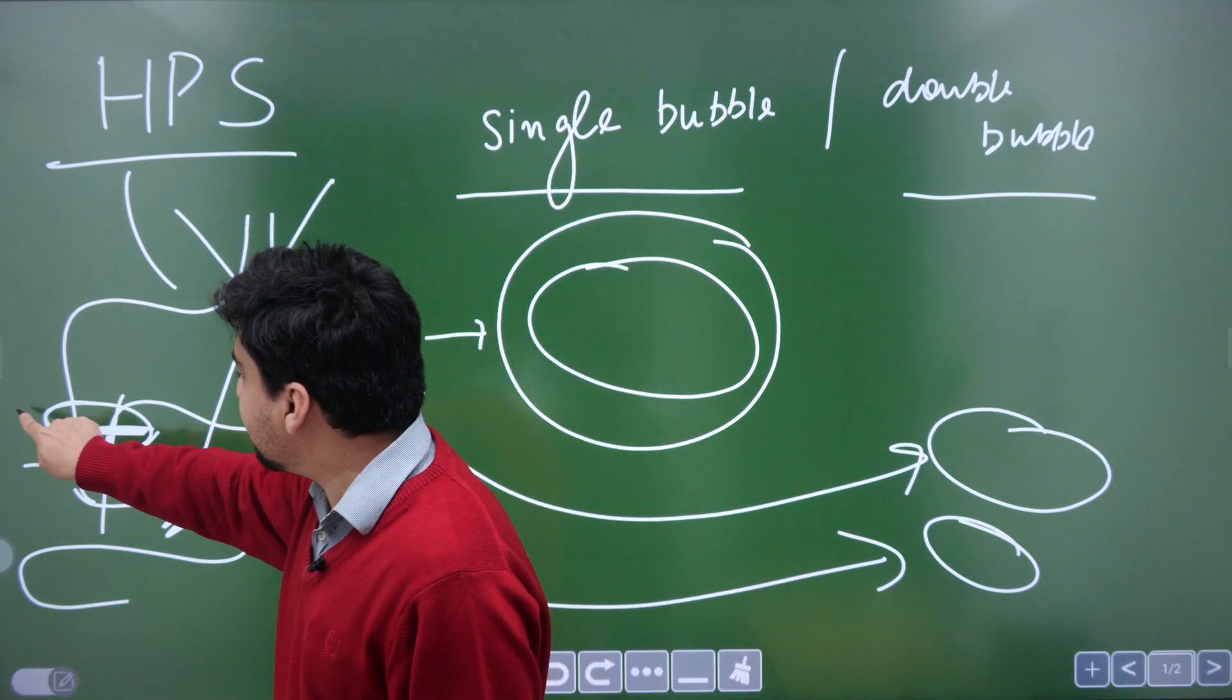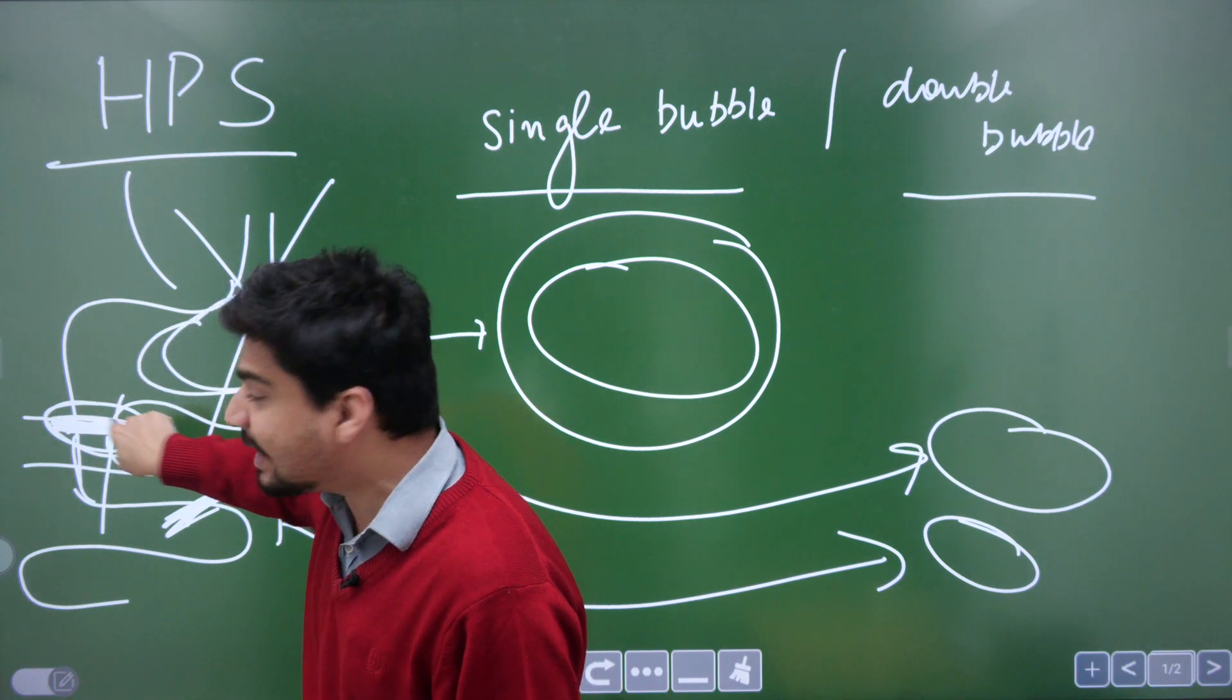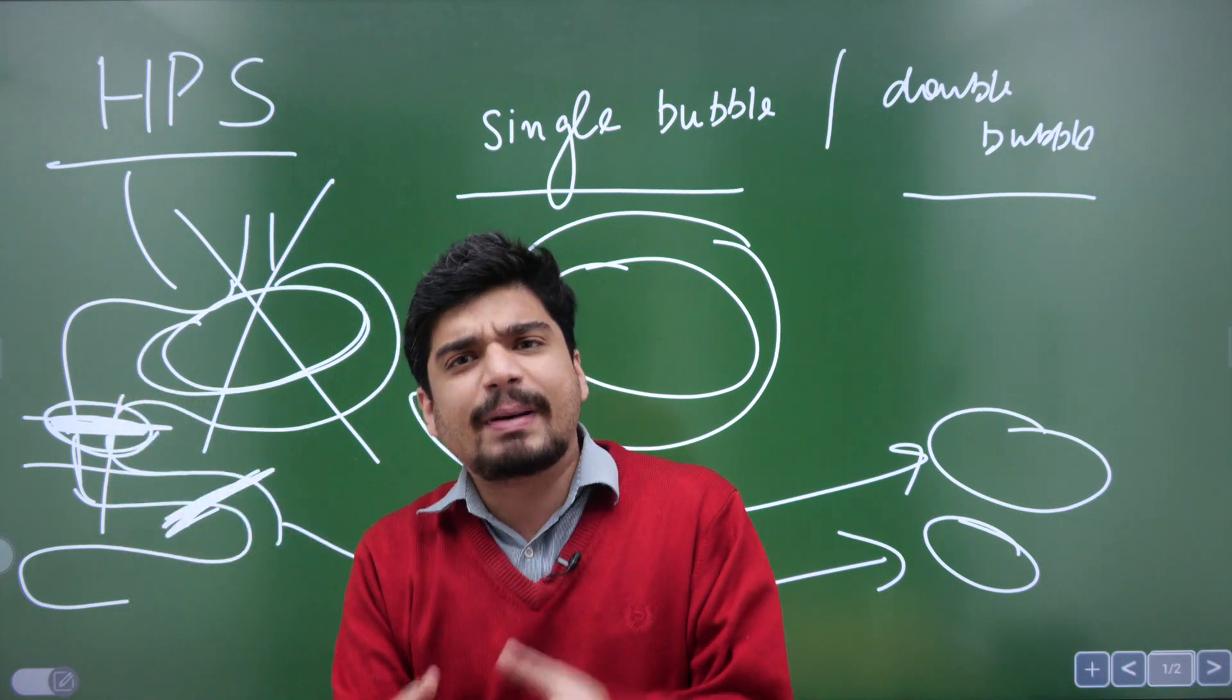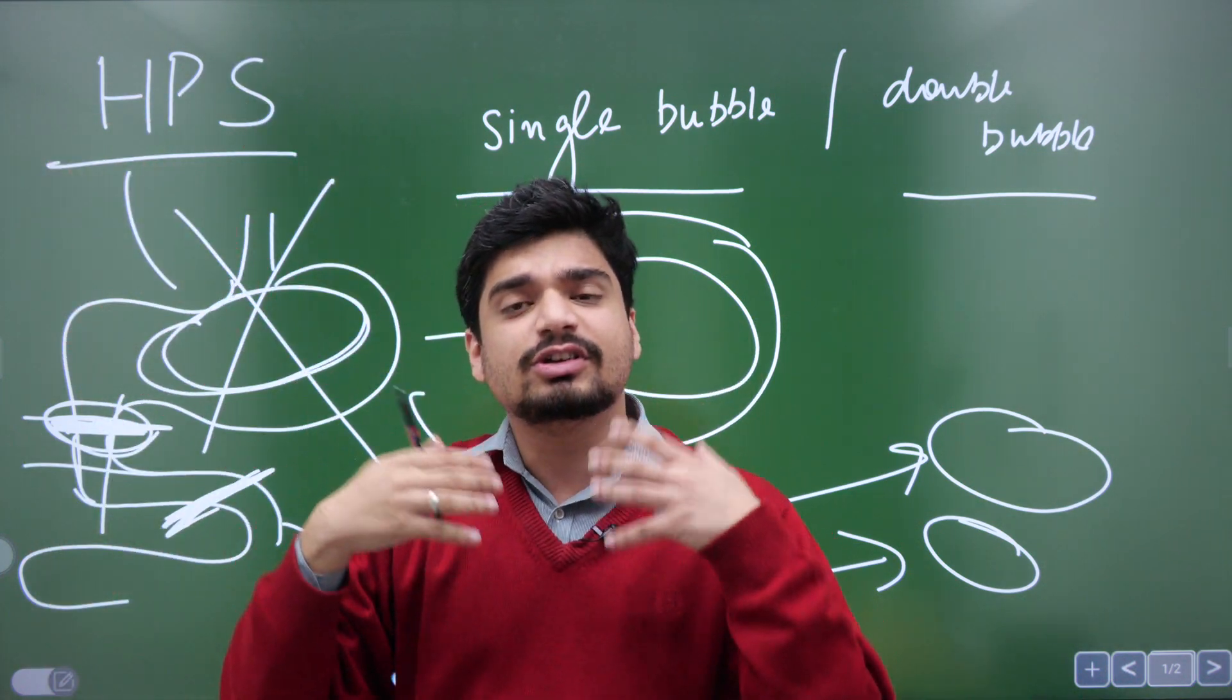Because in case of hypertrophic pyloric stenosis, the contents of stomach are being released and obstruction has occurred already at the level of pylorus. So there is no bile which is coming in the stomach contents which is being vomited out.